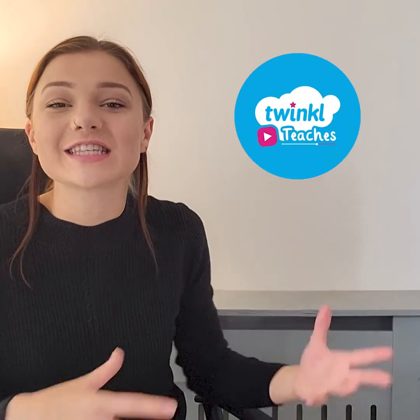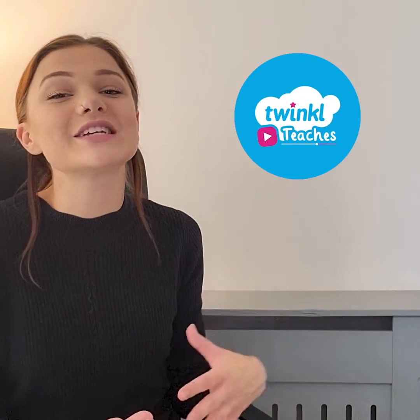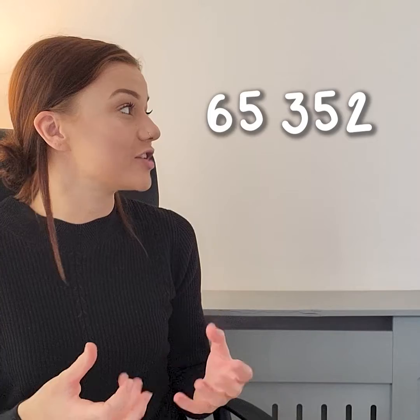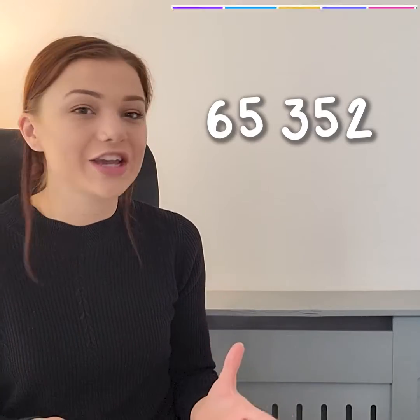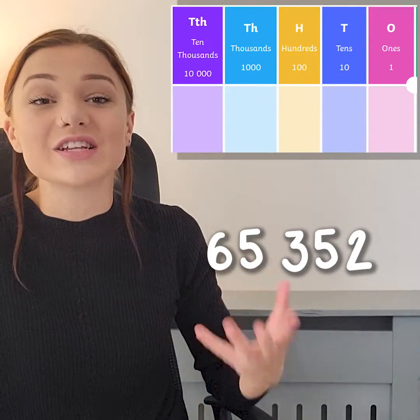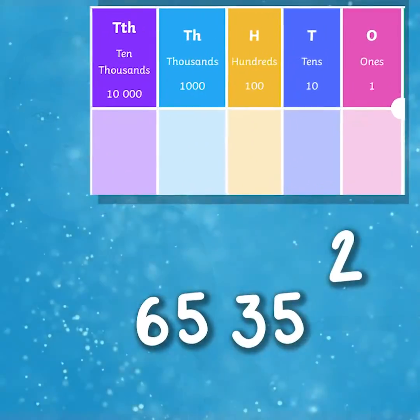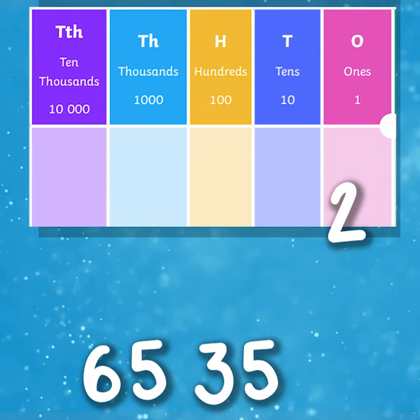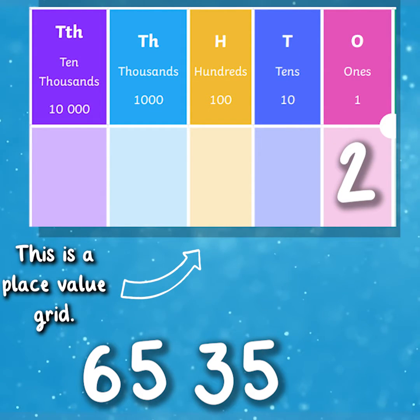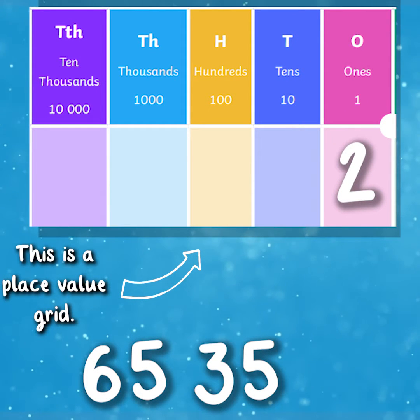Place value is when we learn the value of a digit depending on its position within a number. Here is the number 65352. Starting from the right, we can see that there is a 2 in the ones column. This means the value of the digit 2 is two ones.